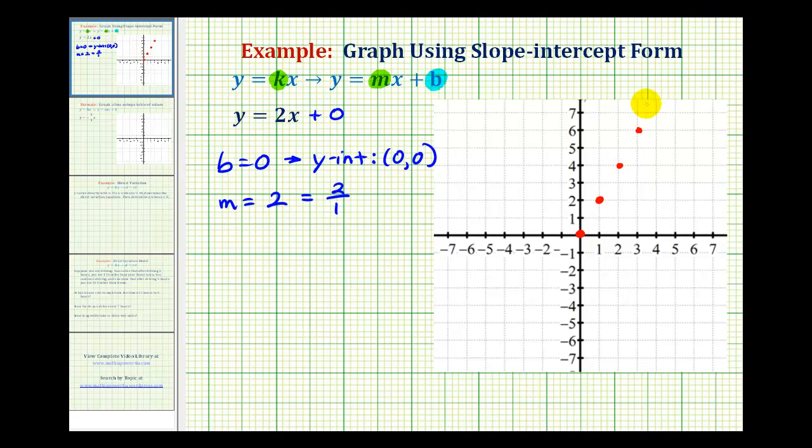So the graph of y equals 2x is a line passing through the origin that looks something like this.